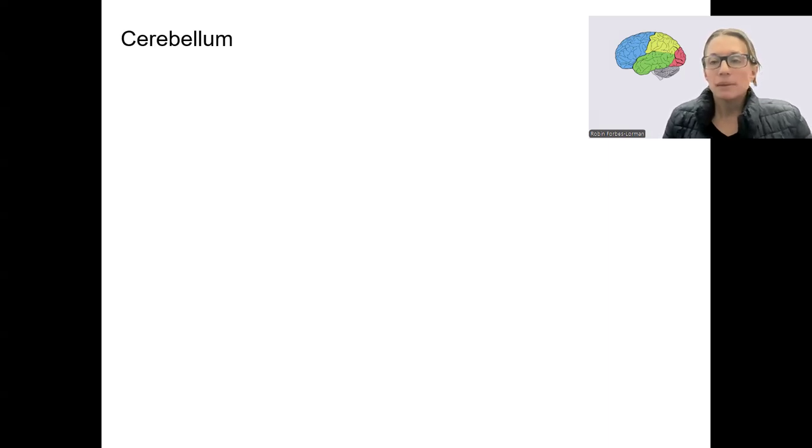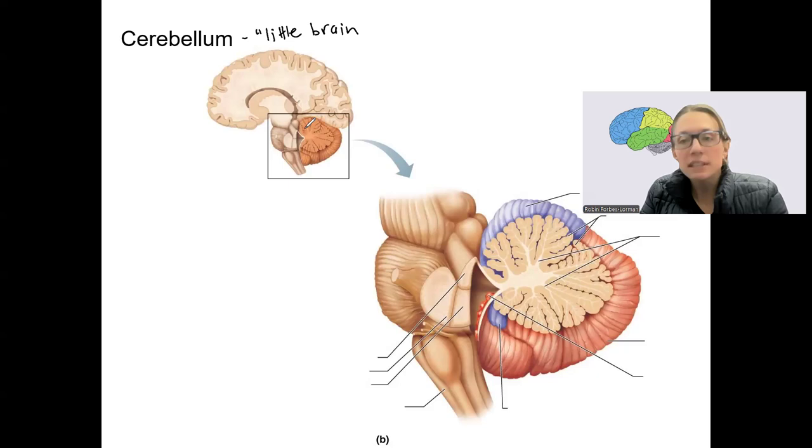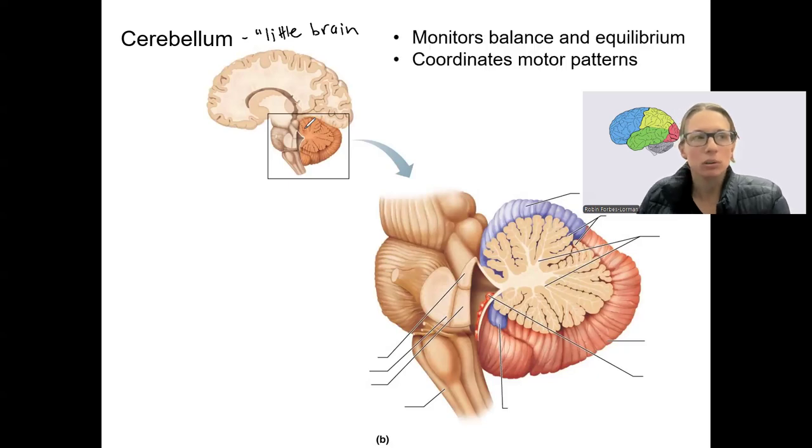The last main brain region is the cerebellum. This is also known as the little brain. The cerebellum is important for monitoring balance and equilibrium and adjusting motor activity. We will see it when we talk about motor control again.